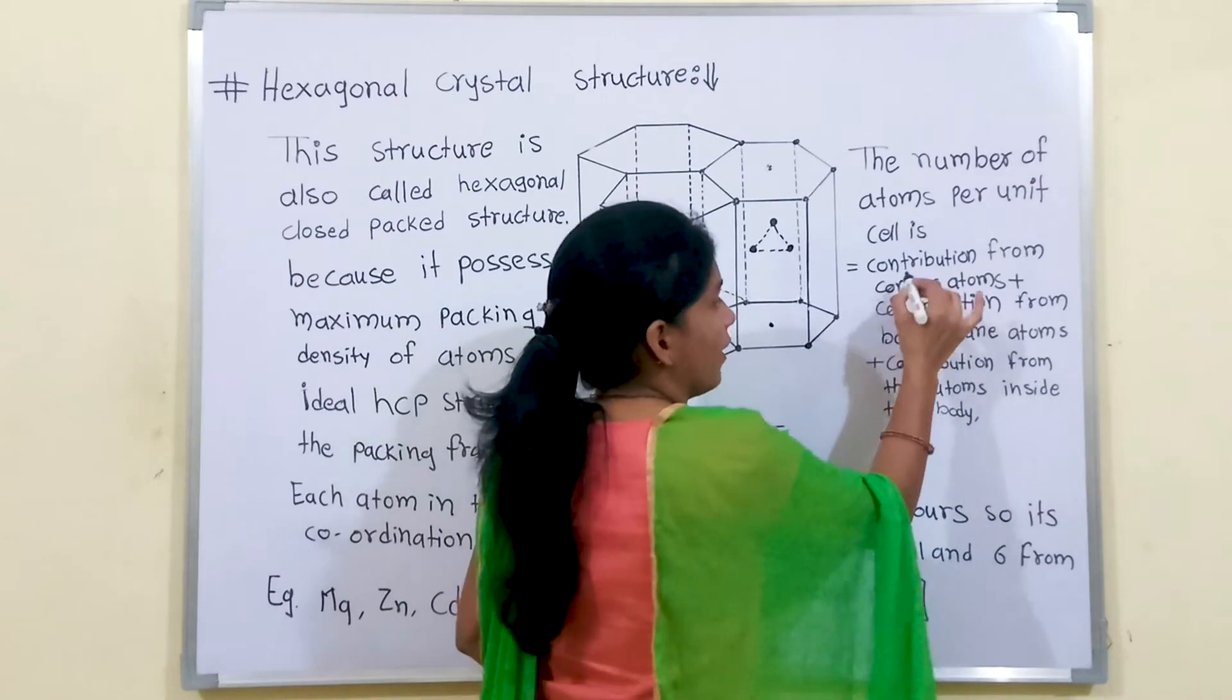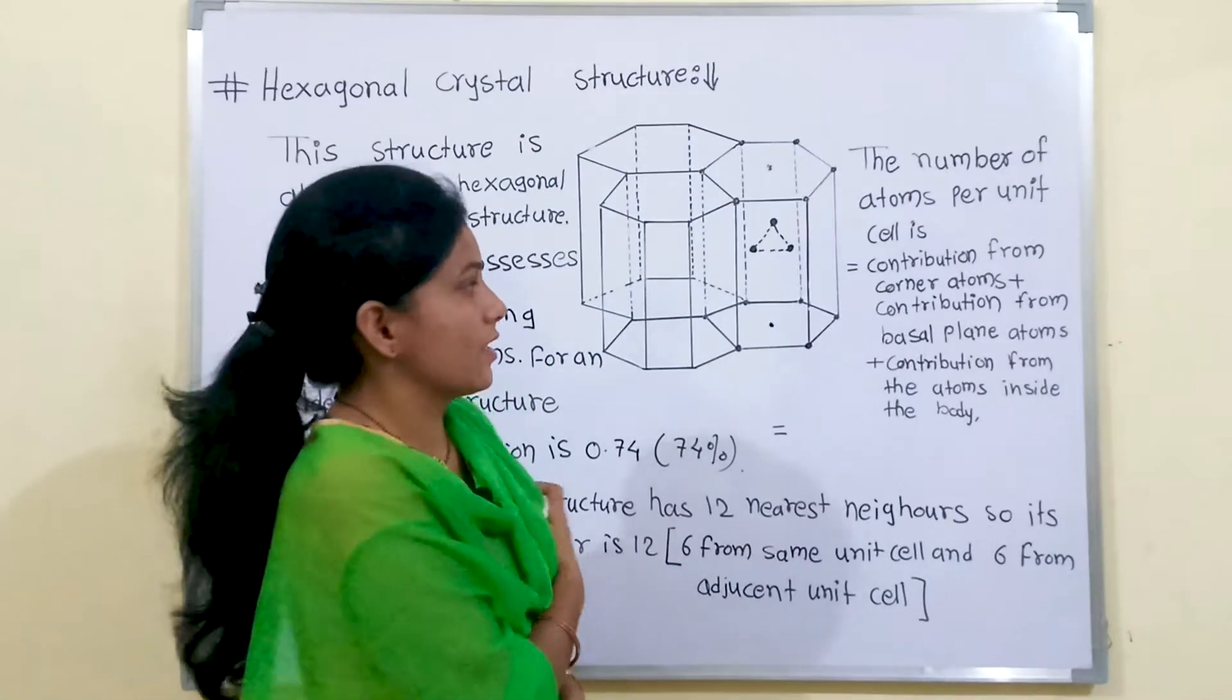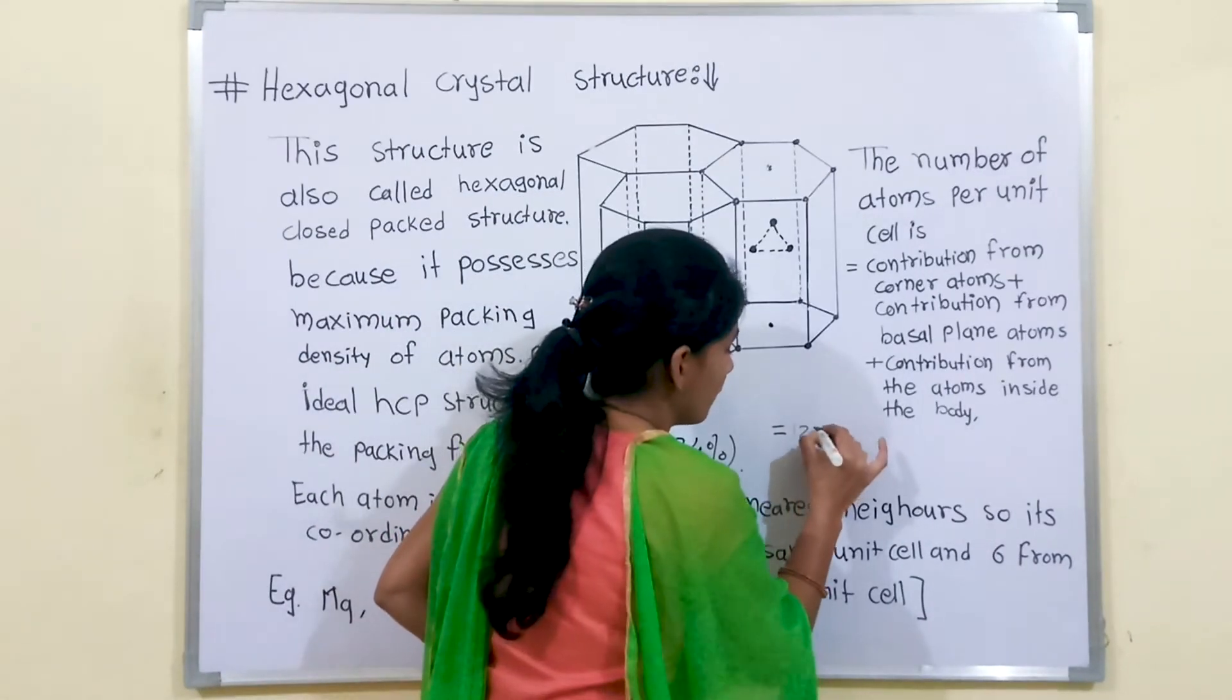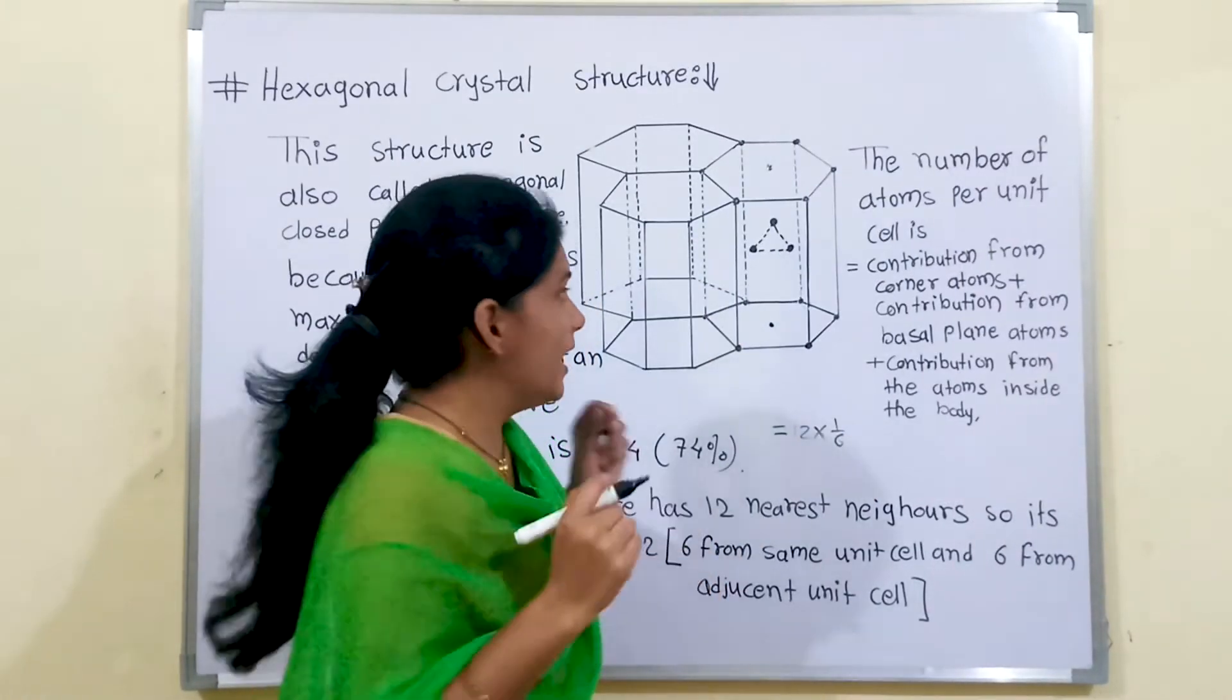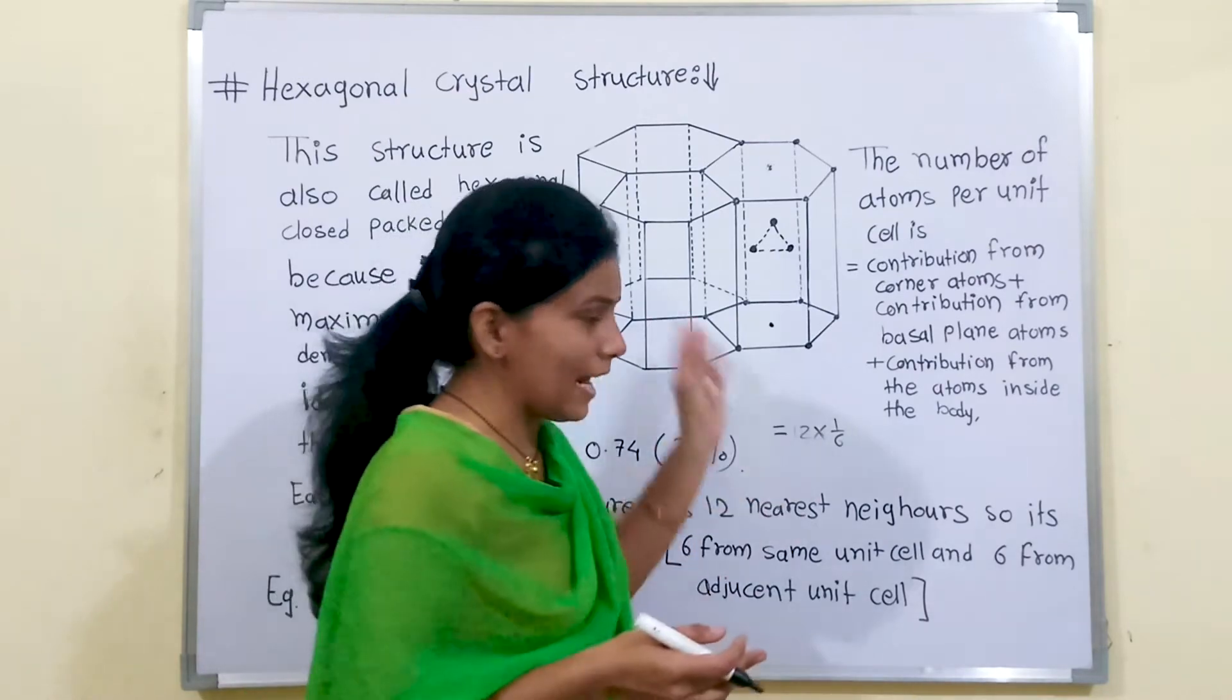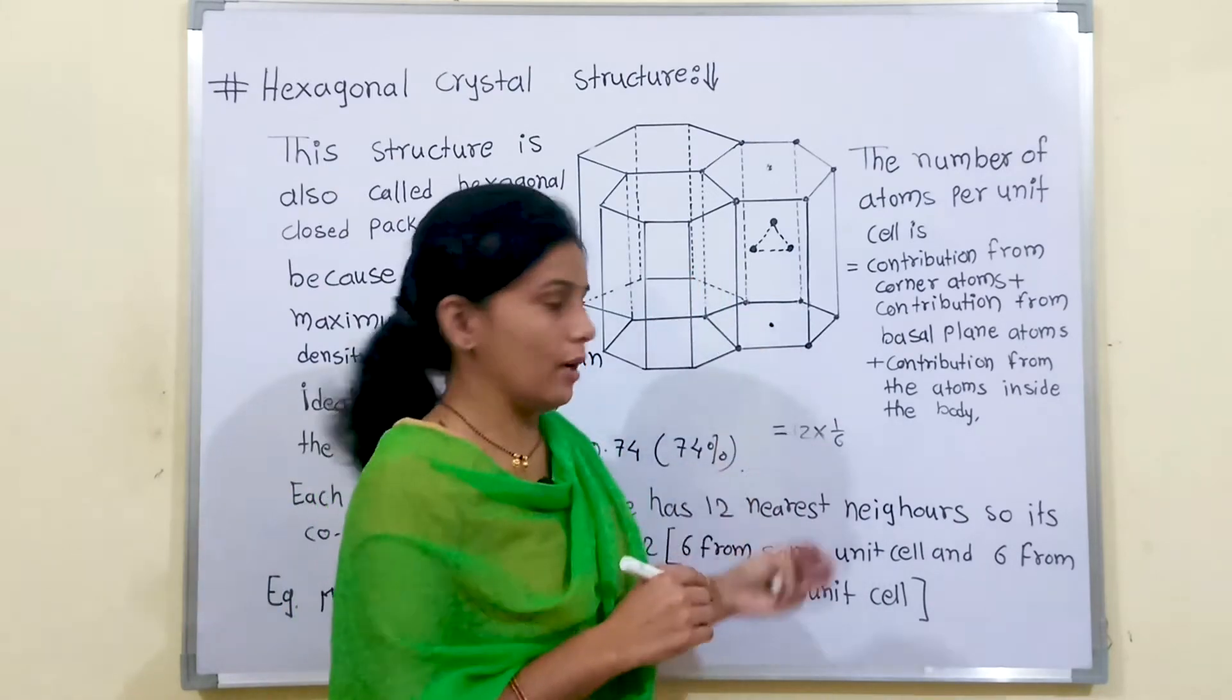We will see first contribution from the corner atom. In hexagonal crystal structure we have 12 corners, so 12 into 1 by 6. Why 1 by 6? Because each atom from the corner, only 1 by 6 part contributes in that same unit cell.